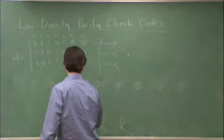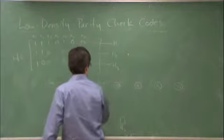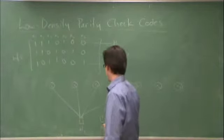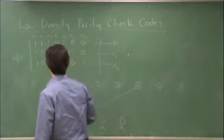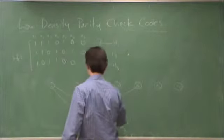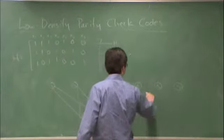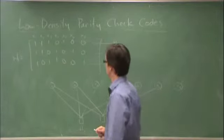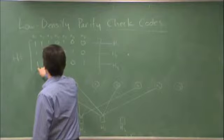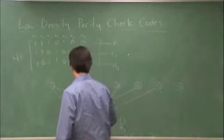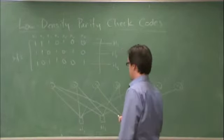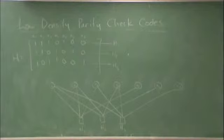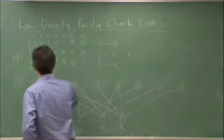And what this check says is that X1 plus X2 plus X3 plus X5 mod 2 has to be zero. So we can connect these, like so, and here we have X1 plus X3 plus X4 plus X7, it has to be zero. So there is the factor graph representing the code part.